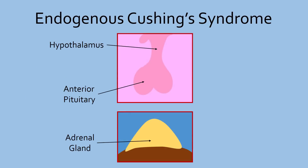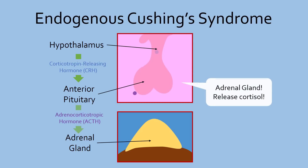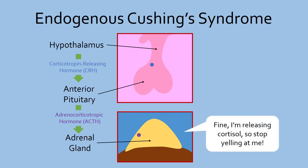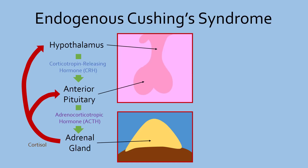Recall from the previous video how the body regulates cortisol production in the adrenal glands. When the hypothalamus releases CRH in times of stress, the anterior pituitary releases ACTH in response, which stimulates the adrenal glands to release cortisol. The released cortisol then stops the anterior pituitary and hypothalamus from releasing their hormones, which then stops cortisol production. Clearly, there is a feedback mechanism to prevent non-stop cortisol release, so why does it occur in Cushing's syndrome?